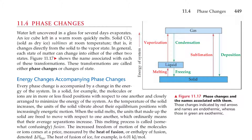Figure 11.17 shows the phase changes and the names associated with them. These changes indicated by red arrows and names are endothermic, whereas those in green are exothermic. Solid to liquid is melting. Liquid to solid is freezing. Liquid to gas is vaporization. Gas to liquid is condensation. Solid to gas is sublimation. Gas to solid is deposition.